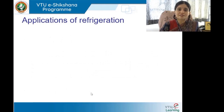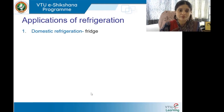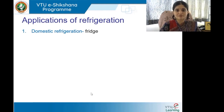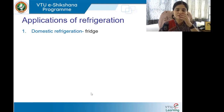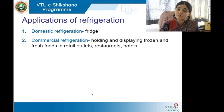Before we plunge into understanding the process, we will look at the applications of refrigeration under various sectors of building technology. The most basic aspect is domestic refrigeration — the fridge which keeps our vegetables, fruits, and food cooler and preserved for a certain amount of time. This box refrigerator keeps objects inside it cooler than the outside temperature.